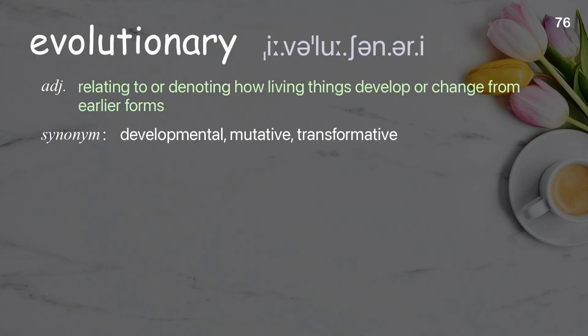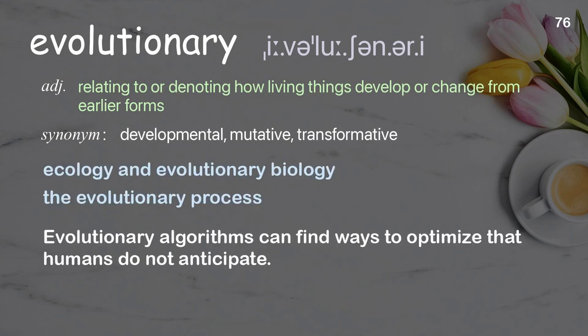Evolutionary. Relating to or denoting how living things develop or change from earlier forms. Examples: ecology and evolutionary biology, the evolutionary process. Evolutionary algorithms can find ways to optimize that humans do not anticipate.